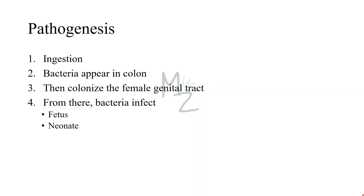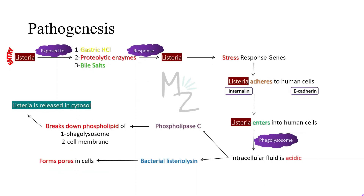Pathogenesis. The first step in the pathogenesis of any bacteria is entry into the human body via ingestion, skin cut, or other means. In the case of Listeria, it is ingestion. Following ingestion, the bacteria appear in the colon, where they can colonize the female genital tract, and from there infect the fetus if membranes rupture, or infect the neonate during passage through the birth canal. Pathogenesis of Listeria monocytogenes depends on the organism's ability to invade and survive within cells, and it is a pyogenic type of pathogenesis.